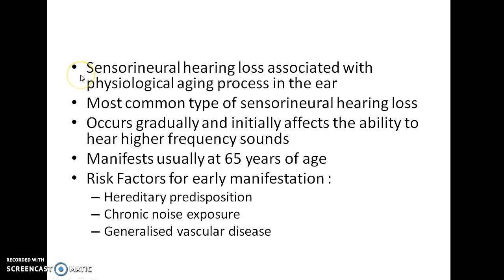Presbyacusis. What is presbyacusis? It is a sensorineural hearing loss associated with the physiological aging process in the ear. It is the most common type of sensorineural hearing loss. It occurs gradually and initially affects the ability to hear higher frequency sounds. It usually affects both ears and manifests usually at 65 years of age.